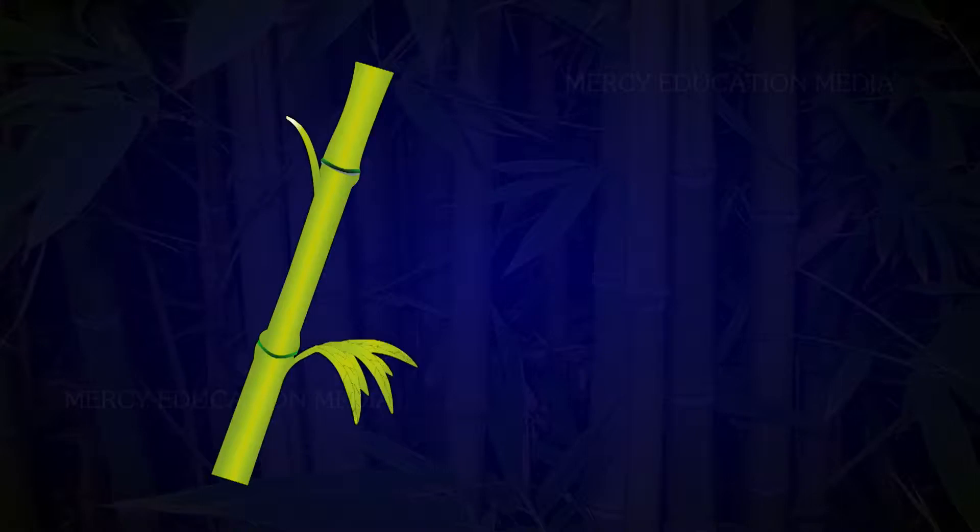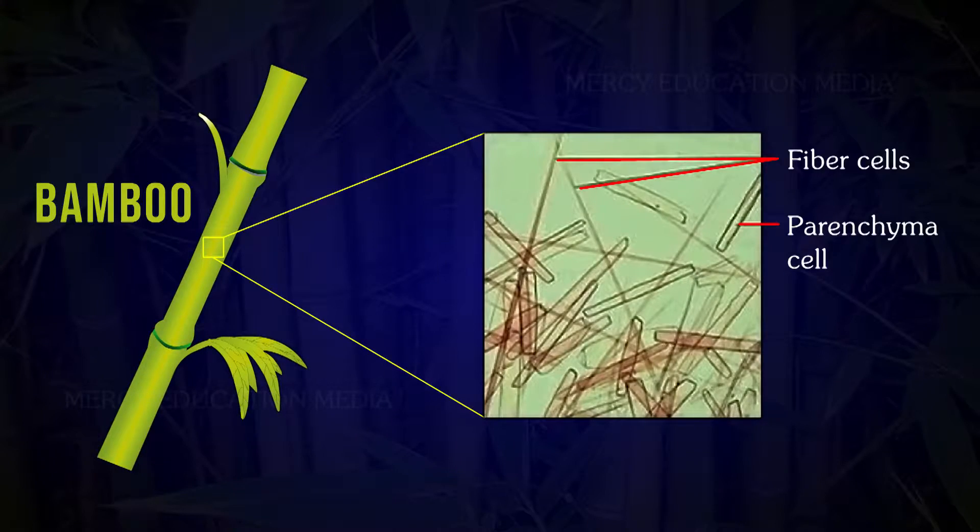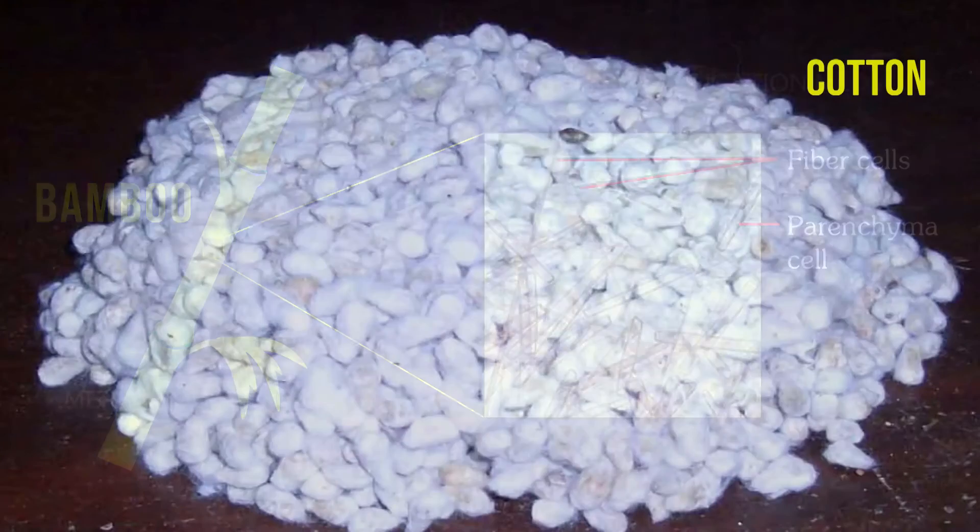The fibers that are found in the seed coat of some seeds are called surface fibers. Example: cotton.